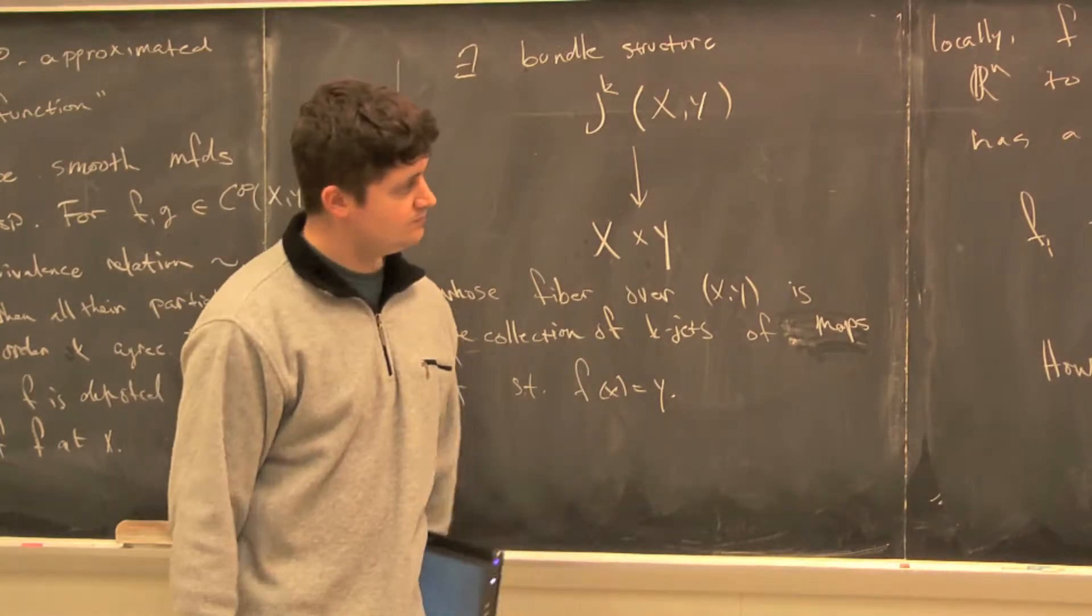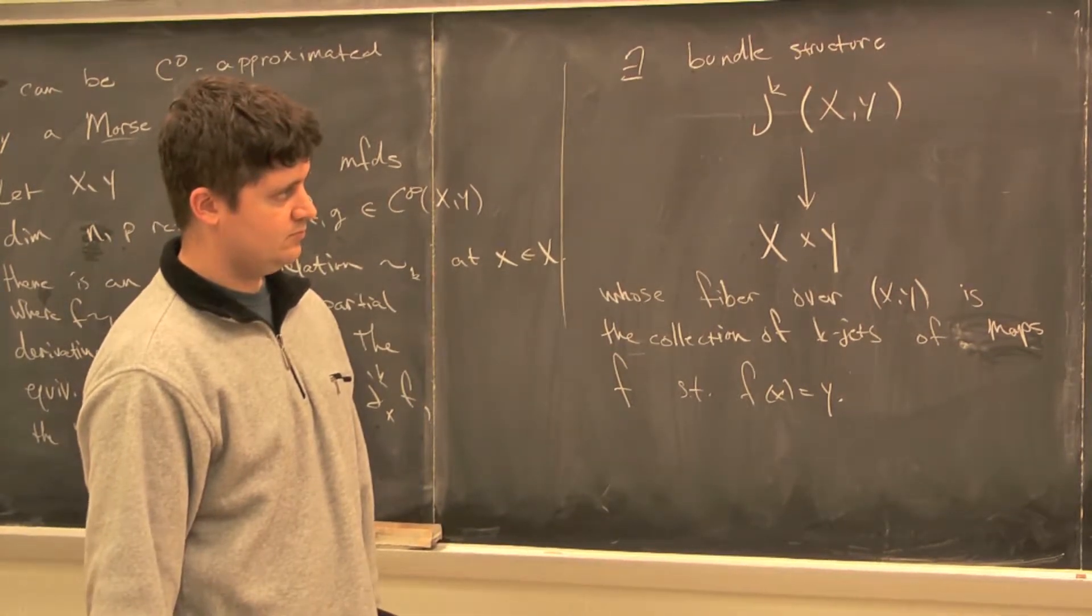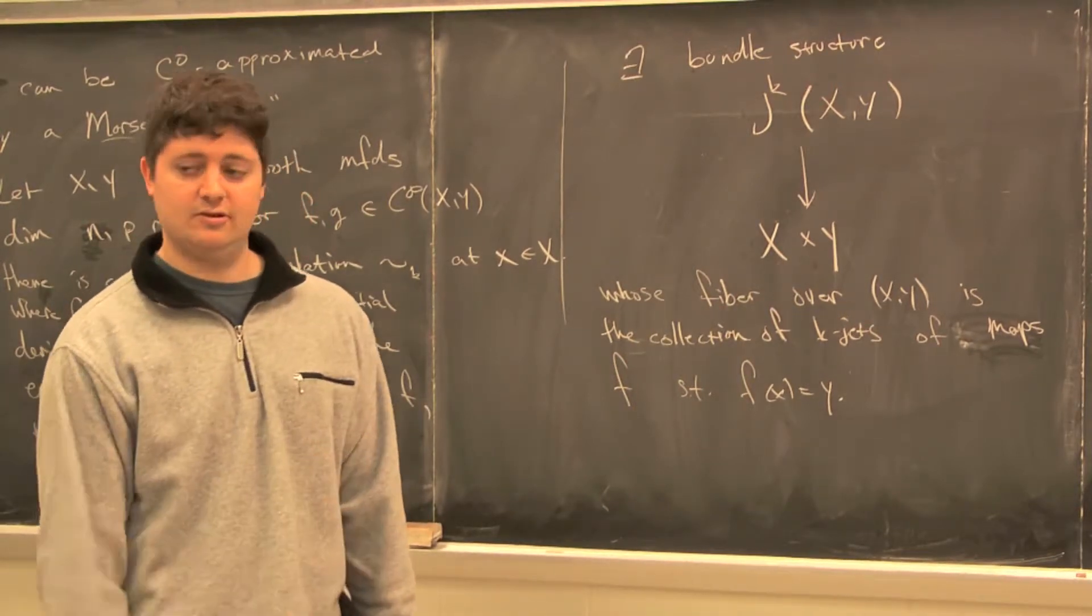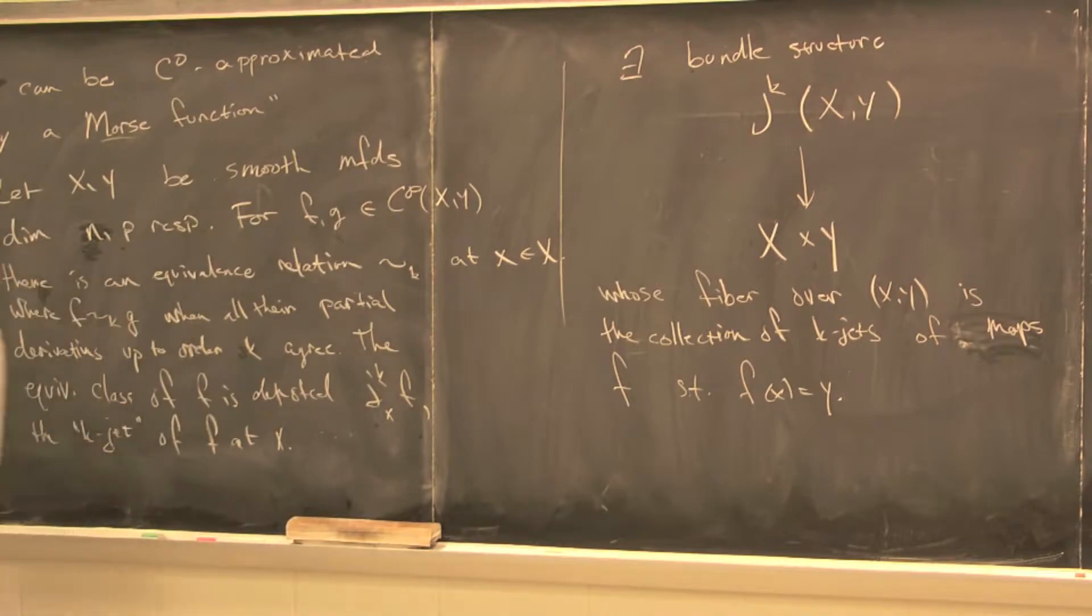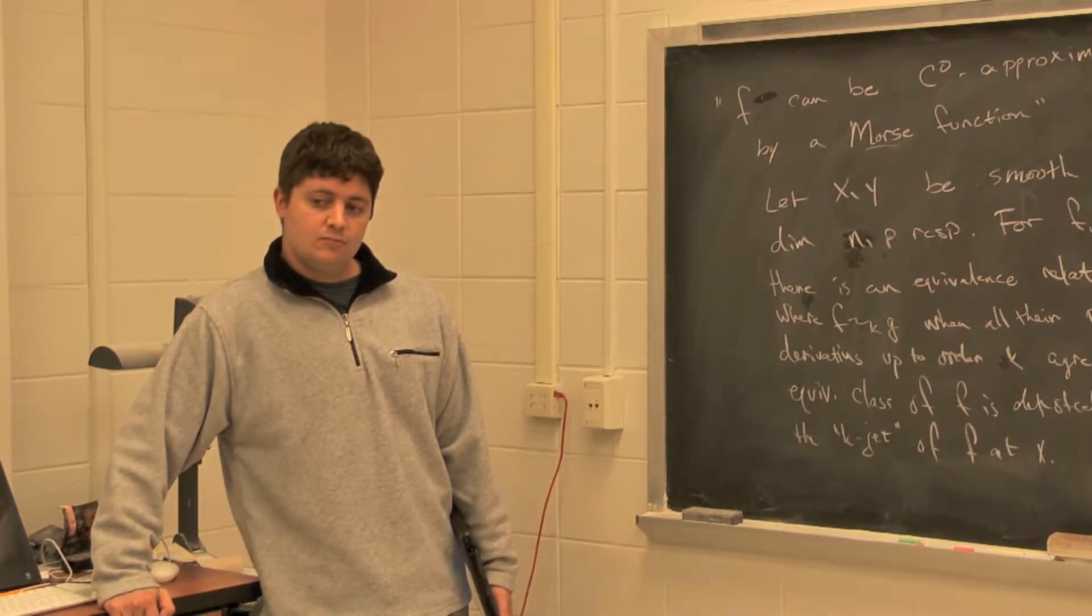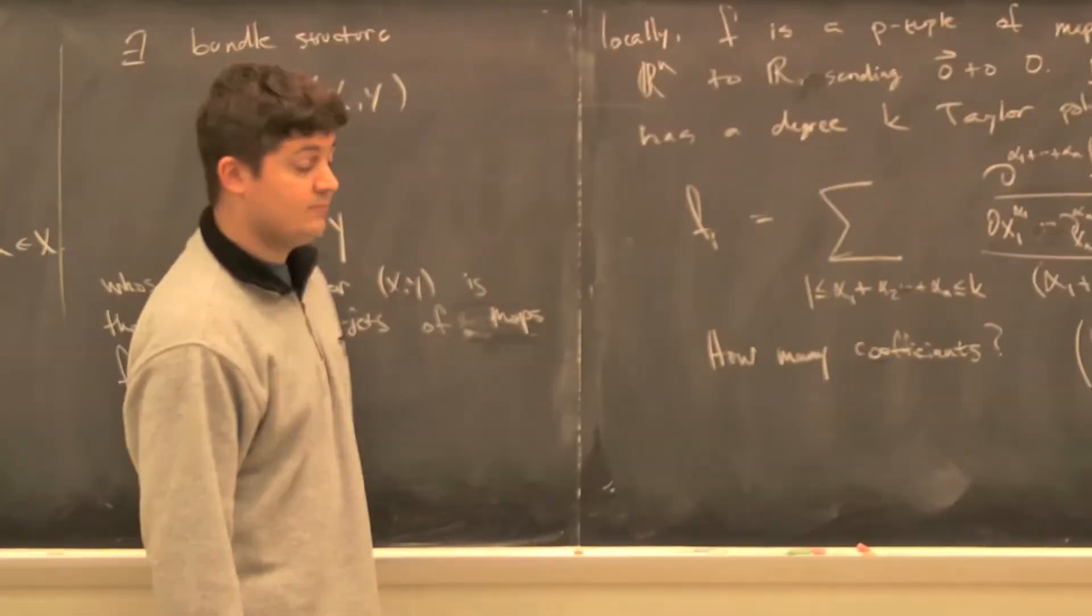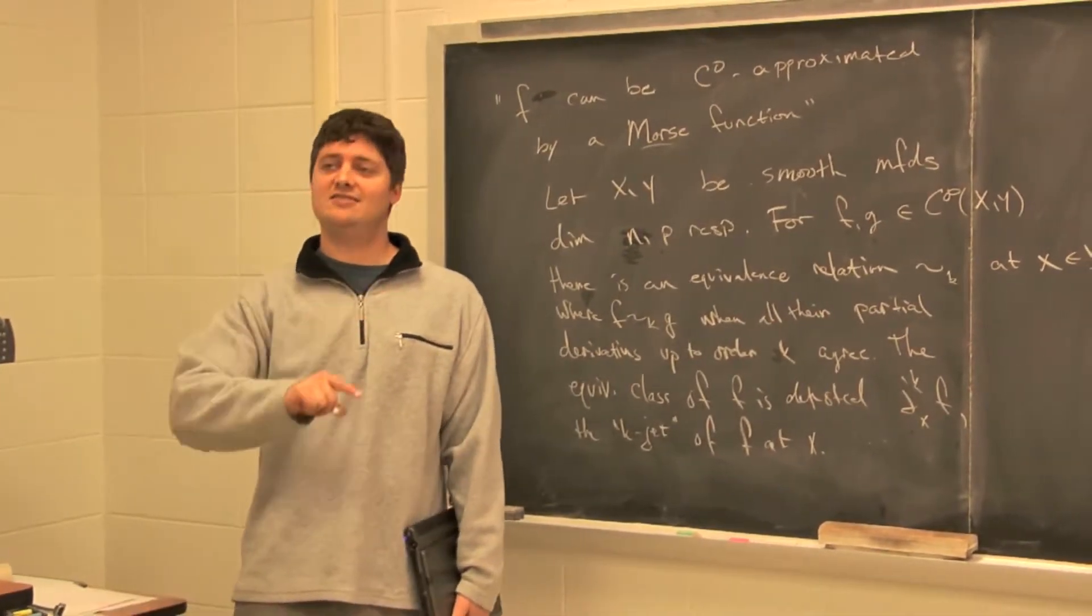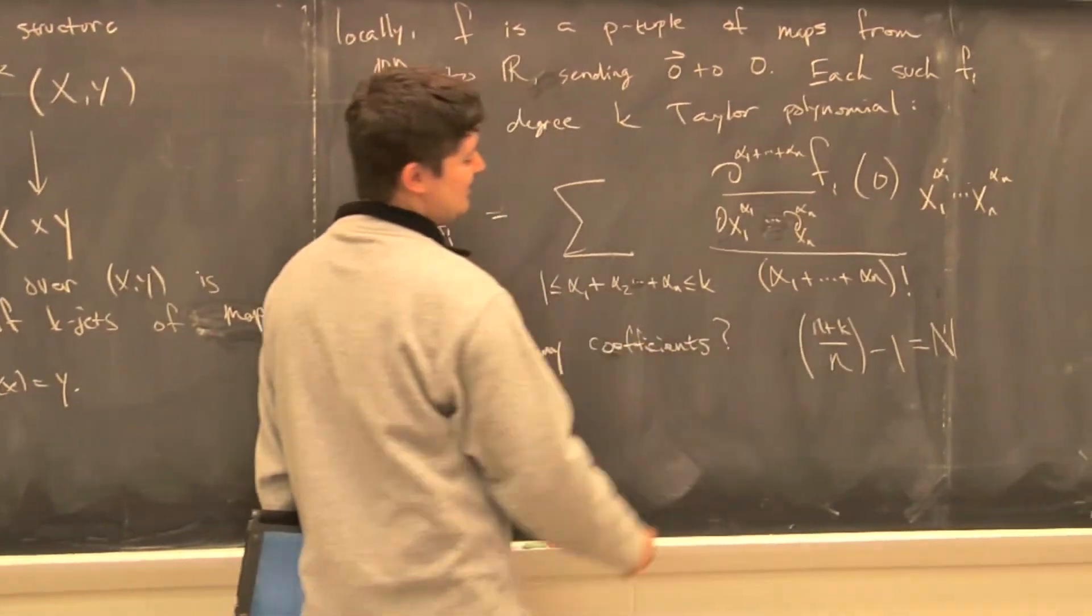Question about the coefficients—the minus 1 comes from the fact that the constant term has to be 0. This bundle structure is a vector bundle, right? So that was going to be—I got one more thing to say, then I'll say the answer is no. This is not the dimension of the fiber. That's the dimension of each coordinate. There's p of them.